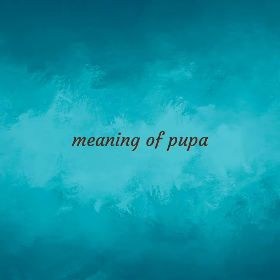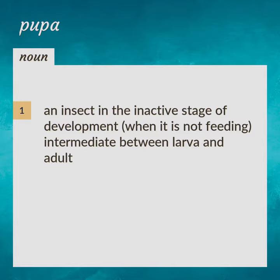Meaning of pupa: an insect in the inactive stage of development, when it is not feeding, intermediate between larva and adult.